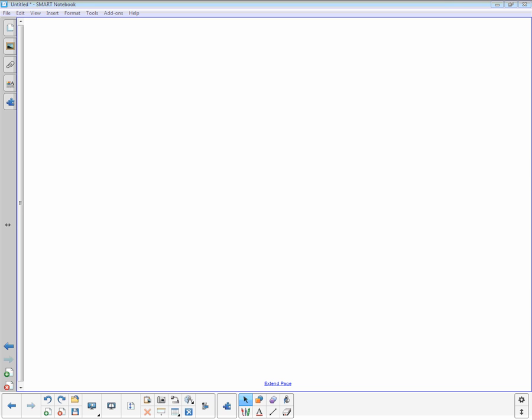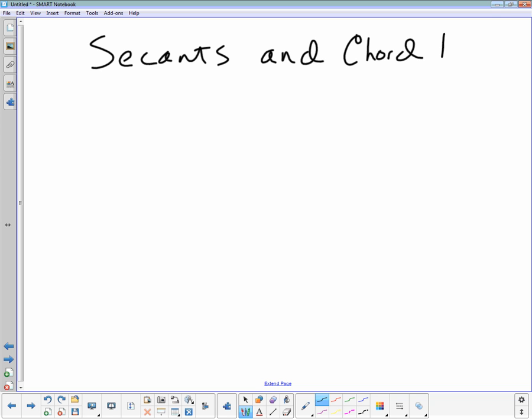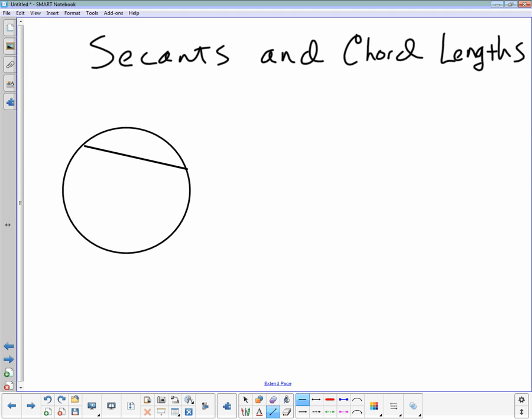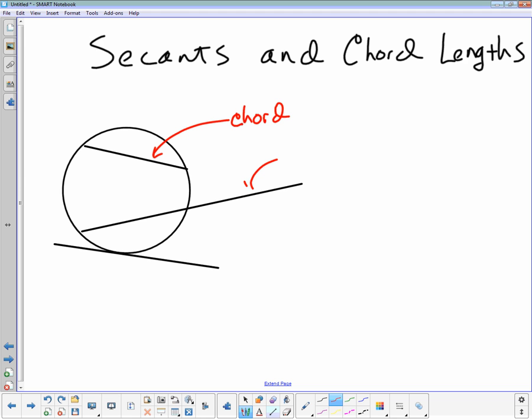Alright, so ladies and gentlemen, today we're gonna be talking about the lengths of secants and chords. The difference between the secant and the chord is very simple, is very subtle. A secant leaves the circle whereas a chord only lives inside the circle from edge to edge. This is a chord, a secant, and a tangent.